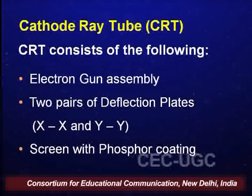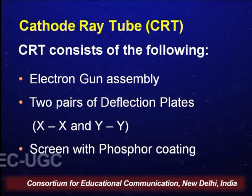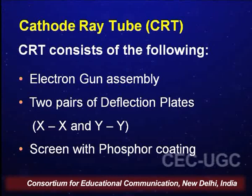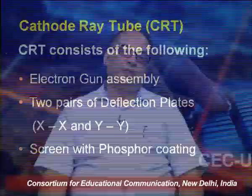The cathode ray tube, which is the heart of the CRO, is popularly referred to as CRT. It consists of three main parts: the electron gun assembly, two pairs of deflection plates XX and YY (where XX is for horizontal movement and YY is for vertical movement), and a screen coated with a phosphor. The role of the electron gun assembly is to give us a fine beam of electrons, and the deflection plates move the electron beam dependent on the amplitude of the signal being input.